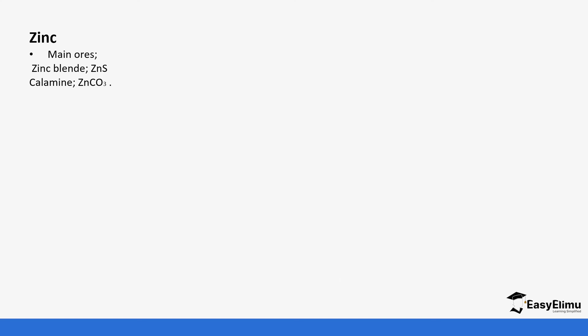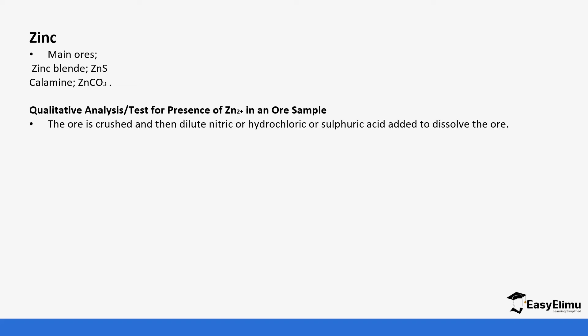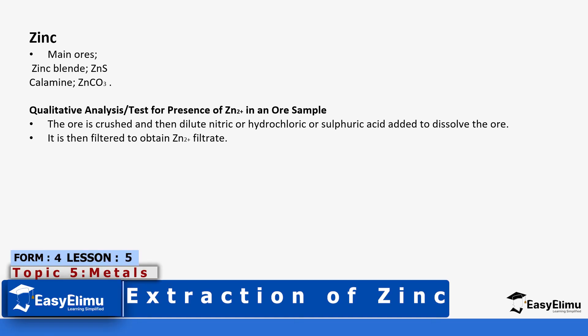The main ores of zinc are zinc blende and calamine. We use zinc blende a lot in our extraction. To test for the presence of zinc ions in an ore sample, the ore is crushed and we add hydrochloric acid or dilute nitric acid. This helps to remove impurities, and then the solution is filtered, leaving a solution containing zinc ions.